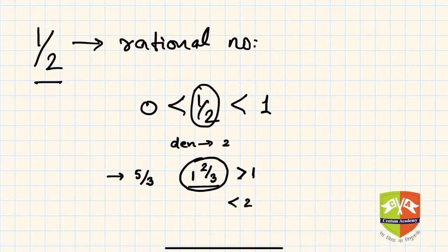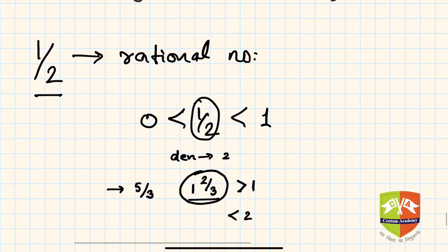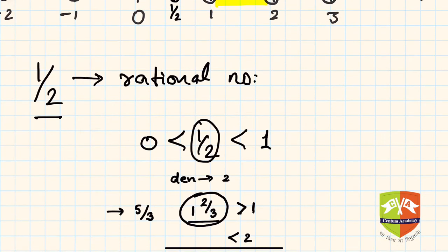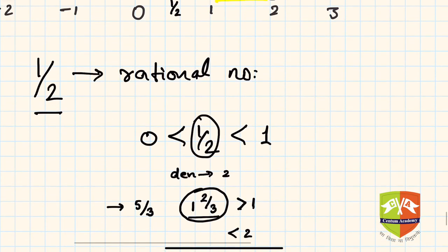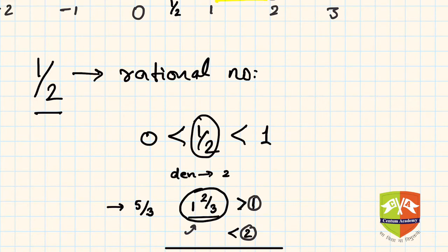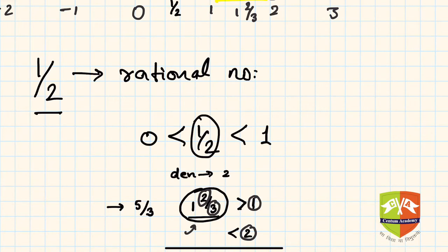The denominator is three, so take the segment between one and two and divide it into three parts. I have highlighted that segment. Now with three parts, the second part — wherever it ends — represents one whole two upon three, which is five by three.